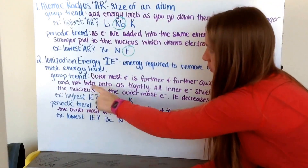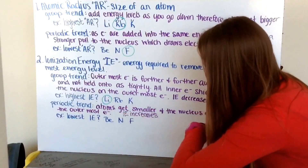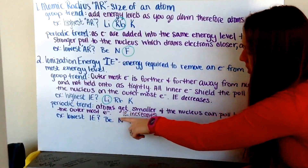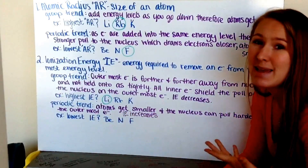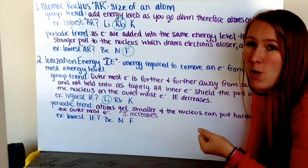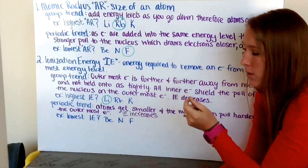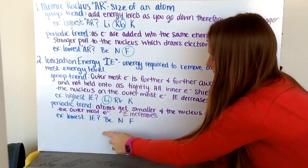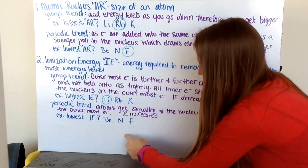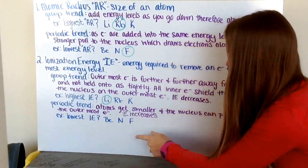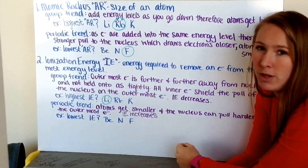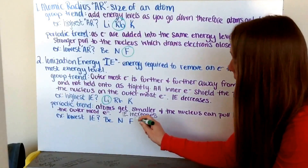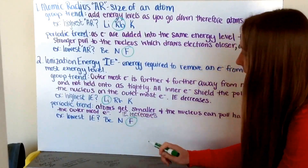My period trend for ionization energy going across my period: my atoms get smaller and the nucleus can pull harder on the outermost electron, therefore my ionization energy increases. It wants one more electron so badly and will put up quite a fight if you try to pull one away. For beryllium, nitrogen, and fluorine — I locate those three: beryllium, then nitrogen, then fluorine. The smallest one is going to be the hardest to remove an electron from, because it wants to hold onto that electron. Therefore, fluorine is going to have the highest ionization energy.